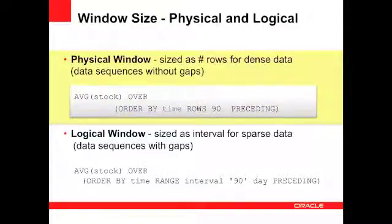In the example shown here, we're going to calculate the average stock by ordering the data set by time and set the range for the average as the previous 90 days. This creates a rolling 90-day average over the whole data set.